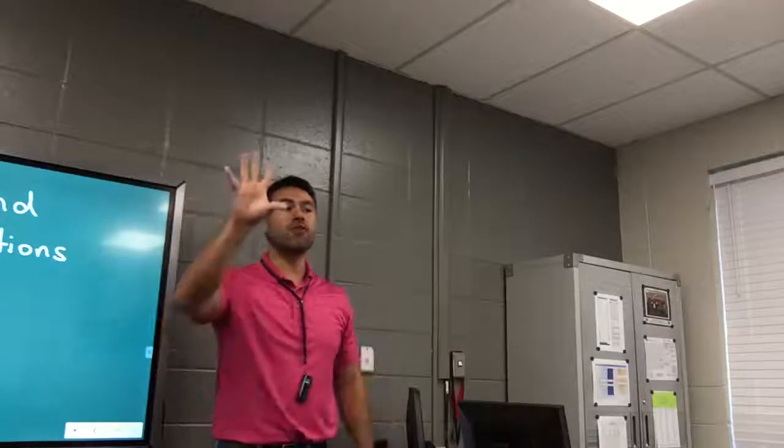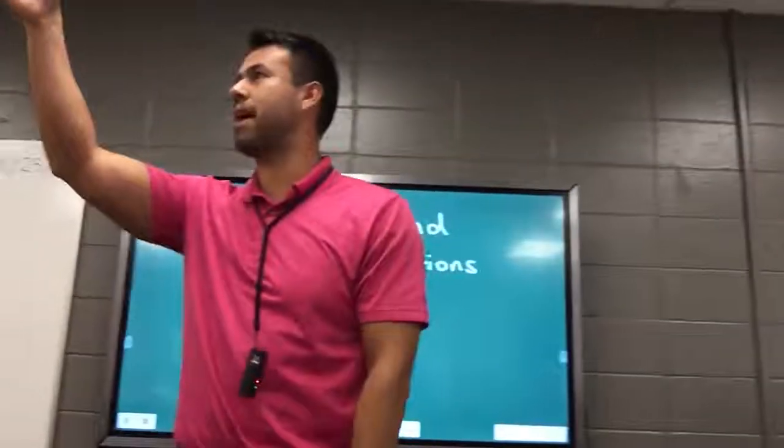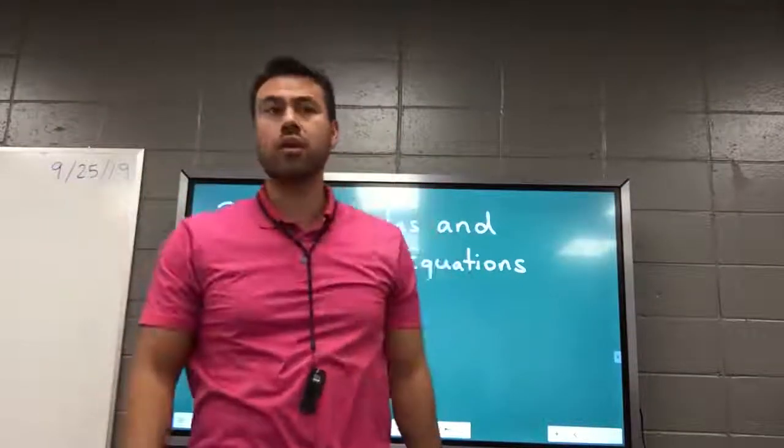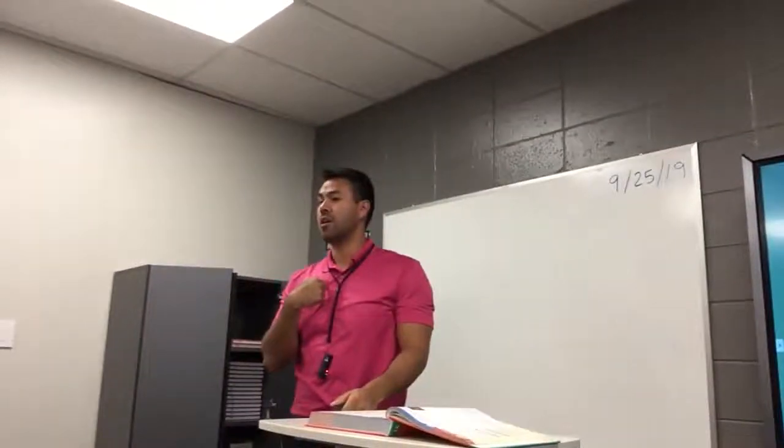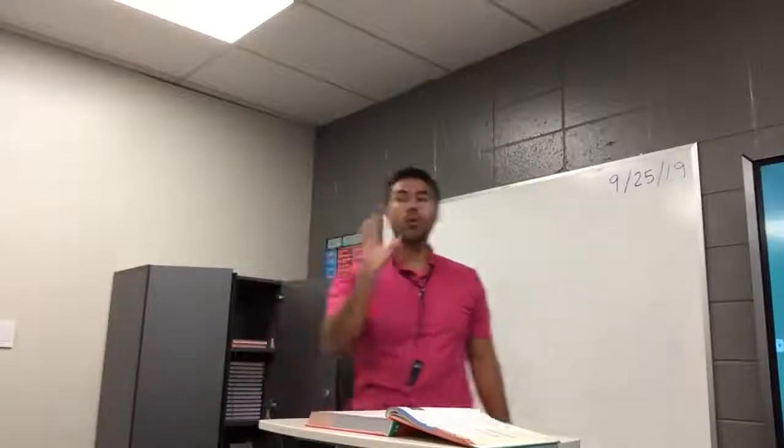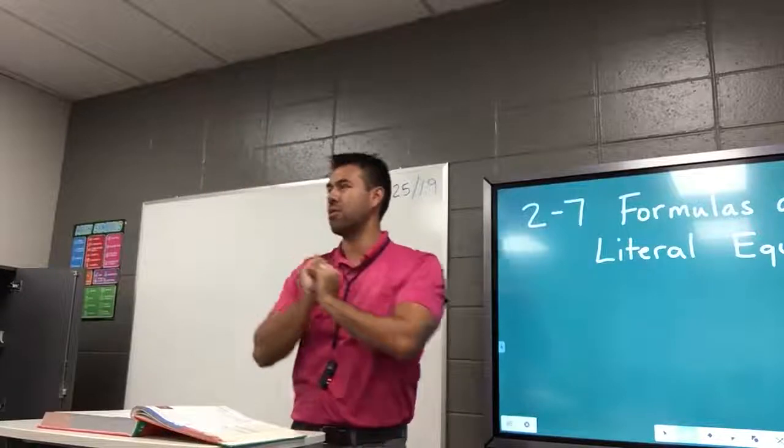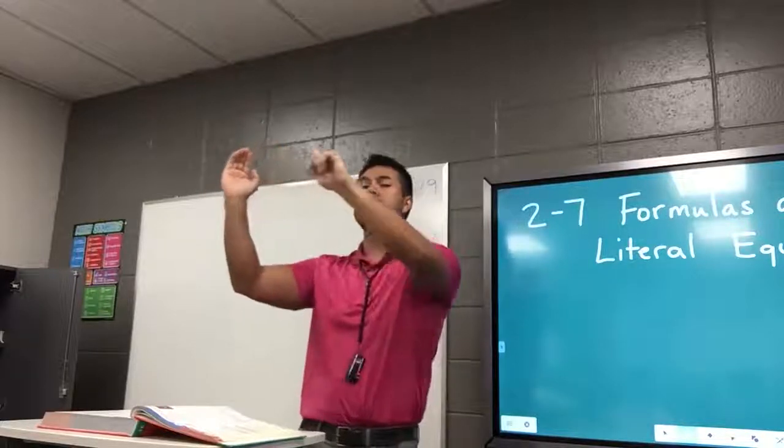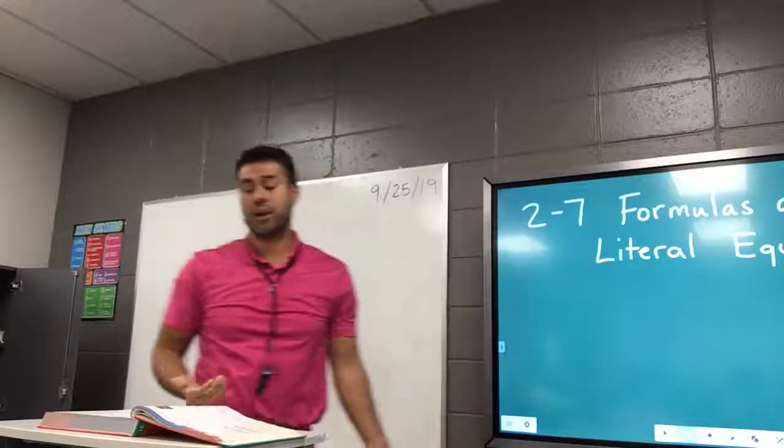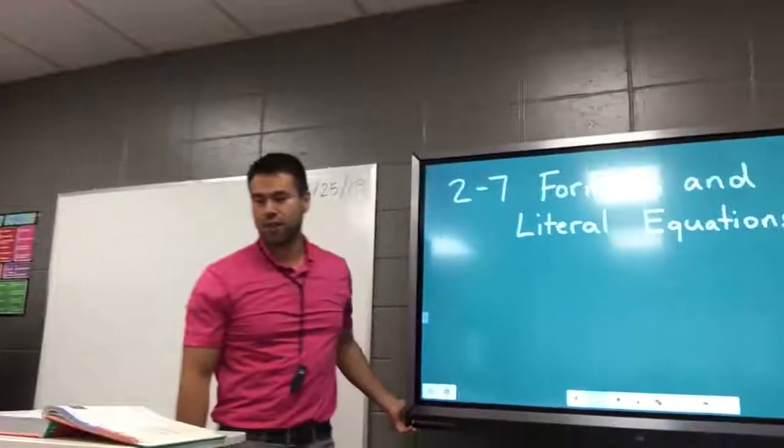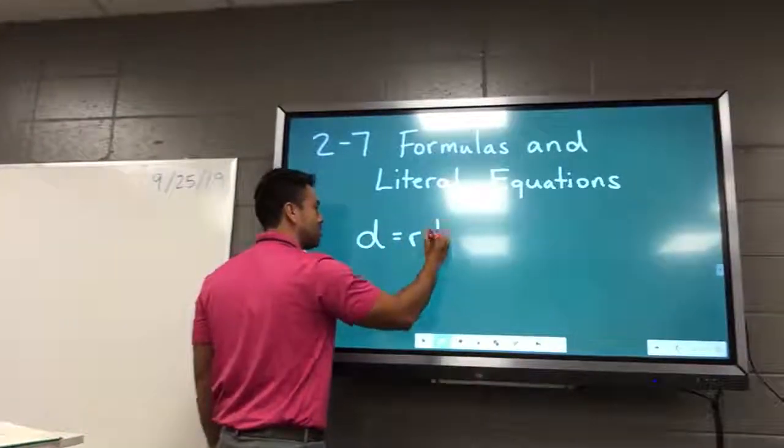But when you get a formula, sometimes you're trying to find the area. But sometimes, they give you the area, and you have to find out what was the radius of that circle. So you don't always have to find what's all by itself. You sometimes have to find some other part because they already gave you the area, the volume, or the perimeter.